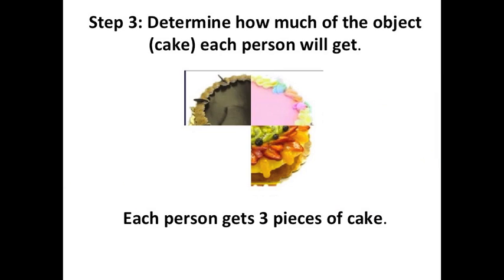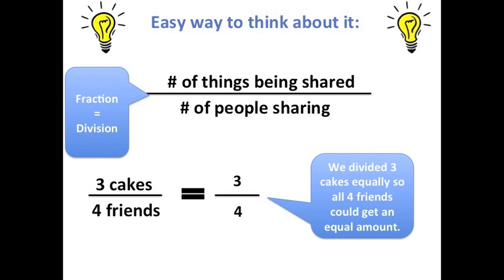My last step is to figure out how much of the cake each person gets. Each person ends up with three pieces of cake. Here's a really easy way to think about it: we are dividing the number of things being shared by the number of people who are sharing it, because that fraction bar is the same as division. I took three cakes and divided them by four friends, so I end up with the fraction three over four.